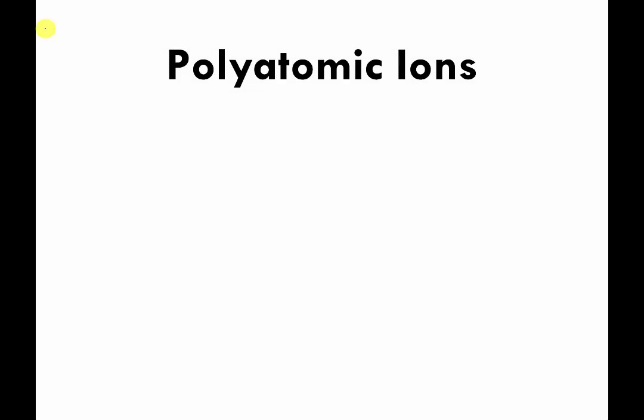Believe it or not, we're still talking about ionic compounds. This is probably the third video where we're talking about it. In this video, we are going to talk about something called a polyatomic ion and how polyatomic ions can also make ionic compounds. I want to break the word polyatomic apart for you so that it's maybe a little less mysterious.